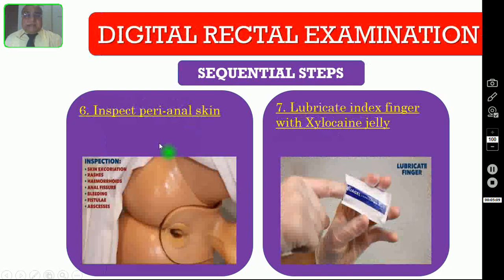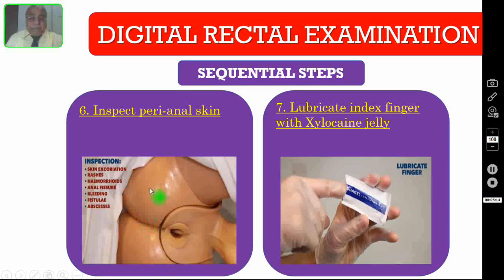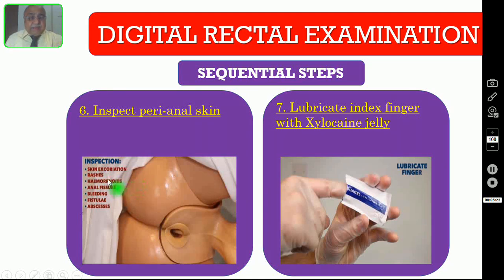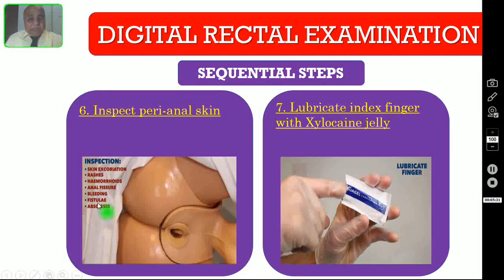The next step is to inspect the perianal area — the perianal skin around the anal opening. You have to look specifically for any skin excoriation, any rashes, any swelling including hemorrhoids or any perianal abscess, any fissure, any fistula, and any bleeding per rectum. All these things you have to look for around the perianal area.